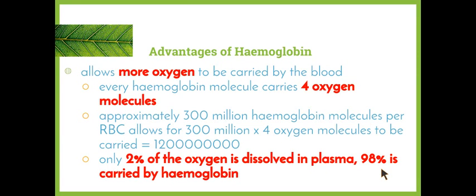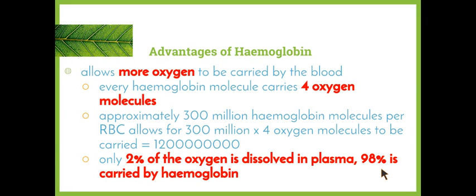The first advantage of hemoglobin is that it allows more oxygen to be carried in the blood. Every hemoglobin molecule carries four oxygen molecules. Oxygen doesn't dissolve very well in water, so only small amounts can diffuse into the blood plasma, which is 90% water. Hemoglobin offers a second way to carry oxygen — with approximately 300 million hemoglobin molecules per red blood cell, each cell can carry four times 300 million oxygen molecules. Only 2% of oxygen is dissolved in the plasma versus 98% that is carried by hemoglobin.